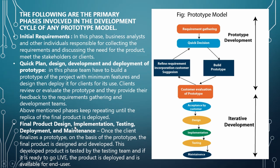As you can see, the cycle keeps repeating: quick decision, build prototype, then customer evaluation. If the client says they are satisfied, we jump to the next stage. If they say it needs refinement or changes, we go back to the quick decision phase and make changes to the prototype. Once the client says they are satisfied, we jump into the final product phase: design, implementation, testing, deployment, and maintenance.